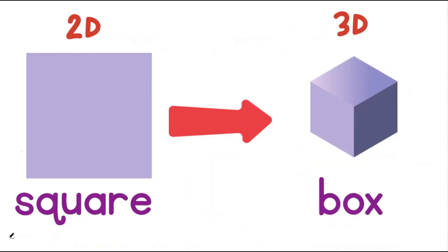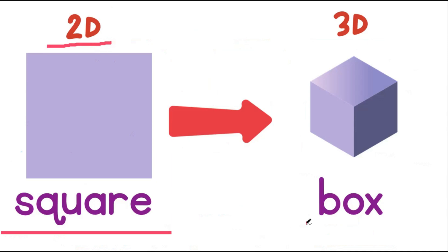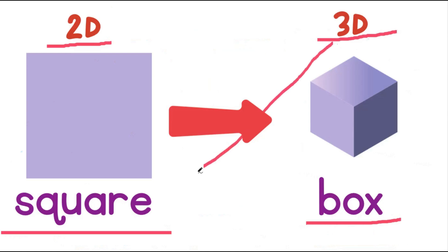This is a square, which is a 2D shape. And this is a box, which is the 3D object of a 2D square. Now let's explore this a little more.